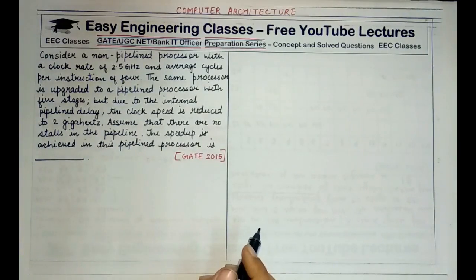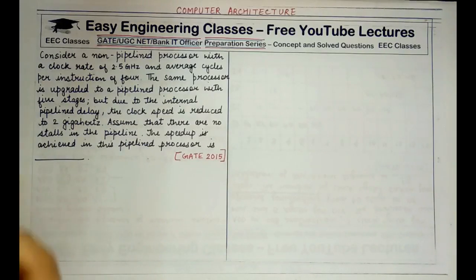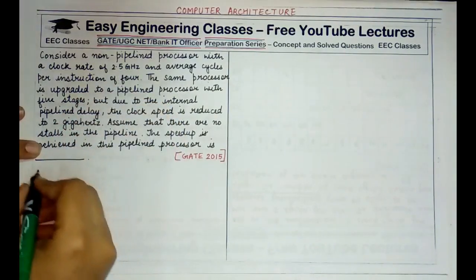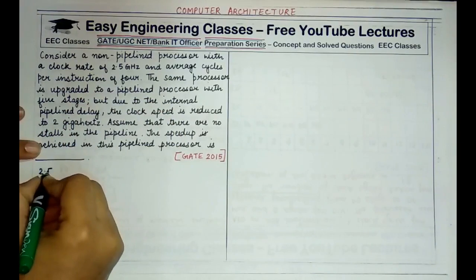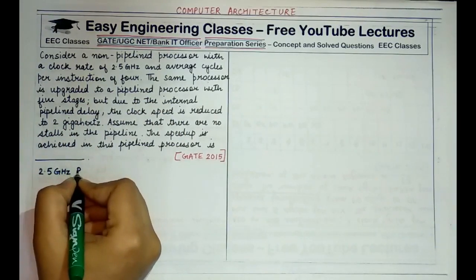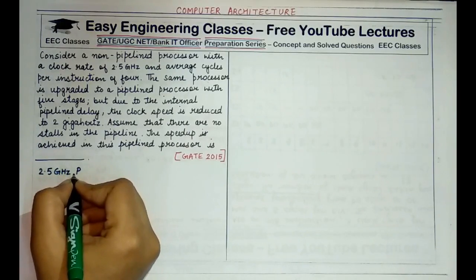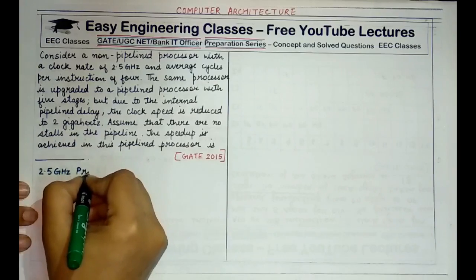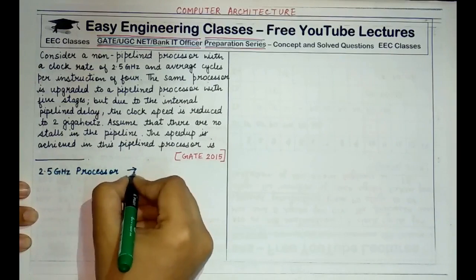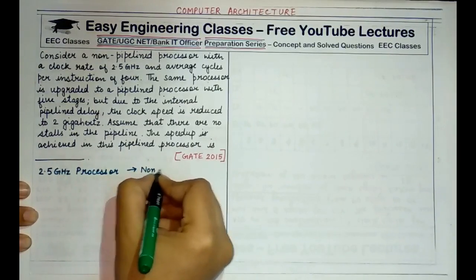Whenever you solve such questions, you need to understand between the lines what the question says. When you are told it is a 2.5 GHz processor, that means in one second, 2.5 GHz cycles are completed. This is for the non-pipelined processor initially.